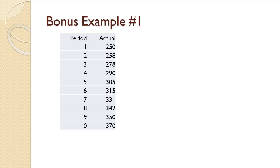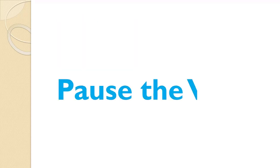For the data shown on the slide, we wish to compute the trend-adjusted exponential smoothing forecast. The forecast will begin in period 5. We use an alpha value of 0.20 and a beta value of 0.40. We wish to carry out the forecast for as far as is possible. Since you've seen an example already, let me suggest that you pause the video and try to work this problem on your own. Once you're done, you can use the video to check your work and spot any mistakes you might have made.